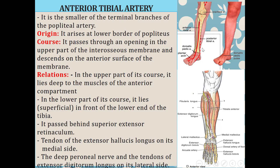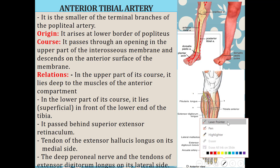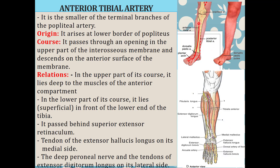The anterior tibial artery arises at the lower border of the popliteus muscle. It passes through an opening in the upper part of the interosseous membrane and descends on the anterior surface of the interosseous membrane. In this diagram, the anterior tibial artery is shown passing through the opening in the upper part of the interosseous membrane and coming onto its anterior surface.